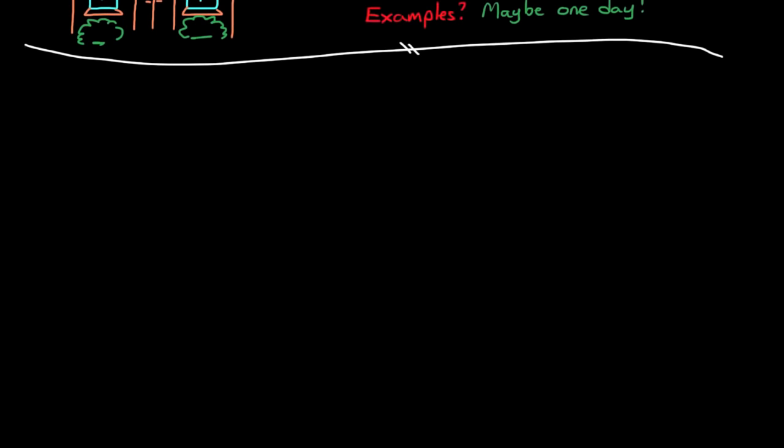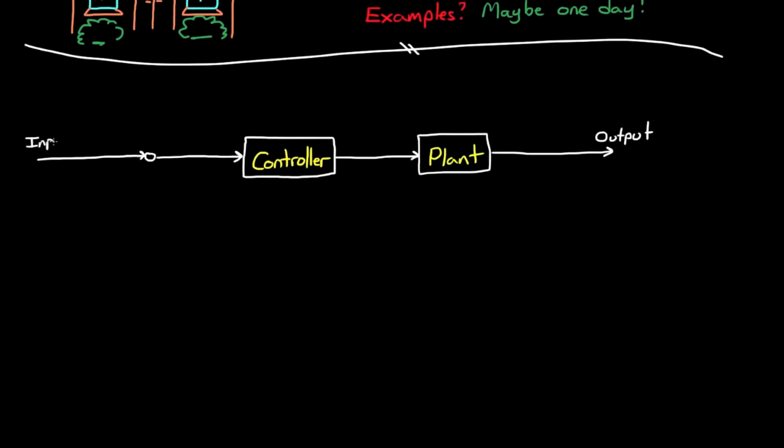Like we often do when we're talking about control systems, we're going to start with a block diagram. This is the block diagram for a typical feedback system. And this block labeled controller is the transfer function that converts the error term into an actuator command. And as the control system designer, you're free to choose any control scheme you want for this controller block. For example, you can choose something like a PID controller, or a lead or lag compensator, or any other compensation technique that you want.